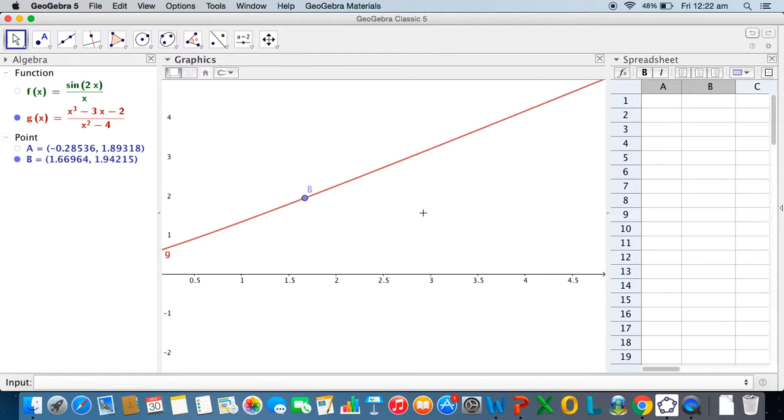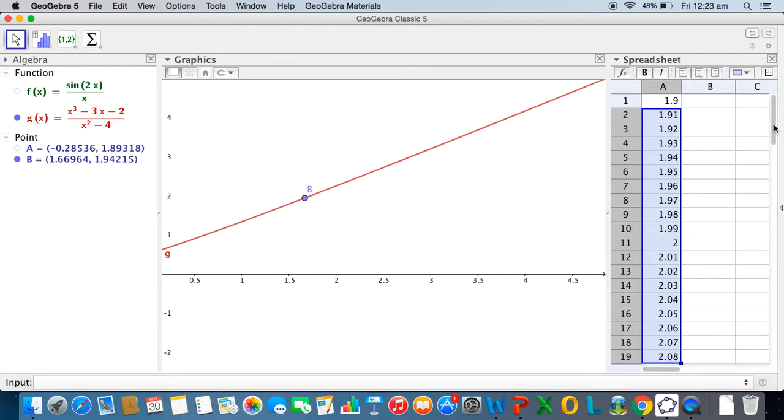So let me now again come back to the spreadsheet and let us explore values of this function as x approaches 2 from either side. So let me say I take a very small interval and I say 1.9, and I increase values of this by 0.01, so I get 1.91 and so on, to say 2.08 let us say.